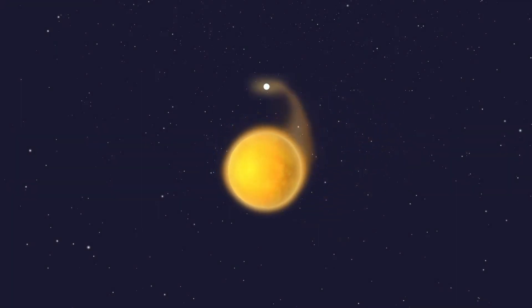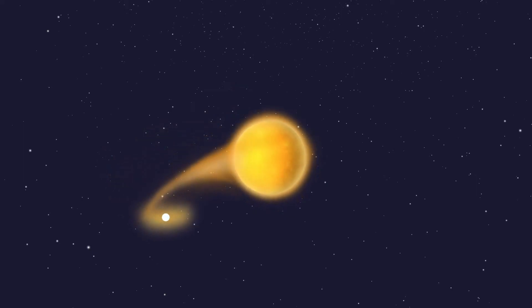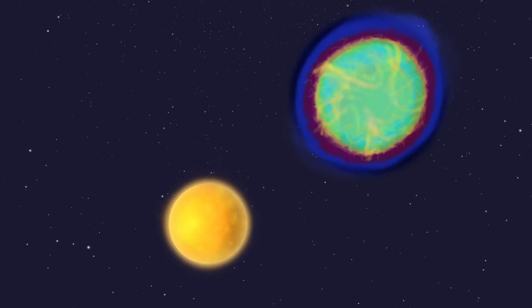White dwarfs don't explode unless they eat too much and gain too much mass. An explosion like this is called a Type Ia supernova.